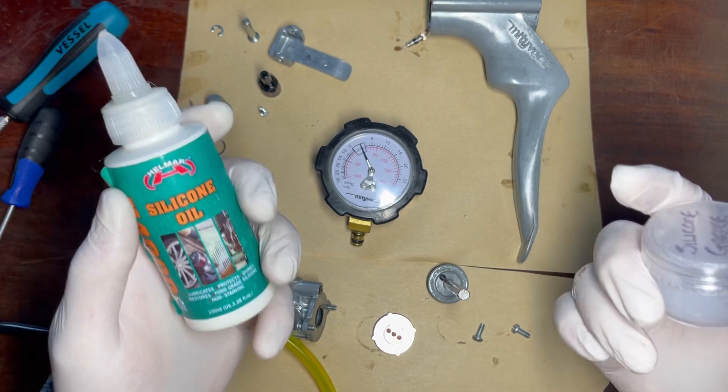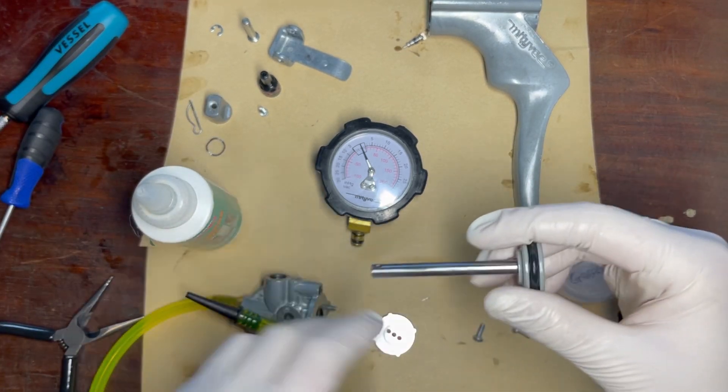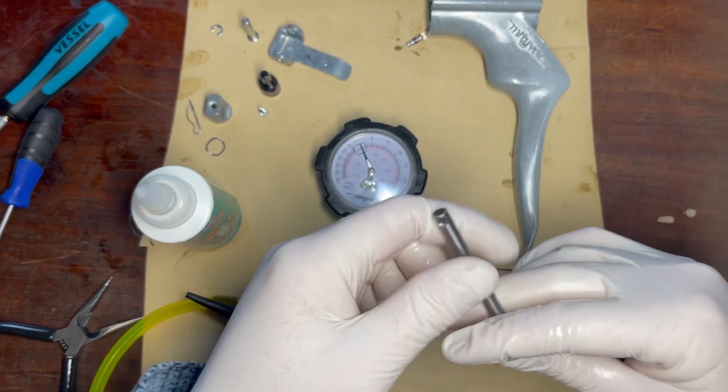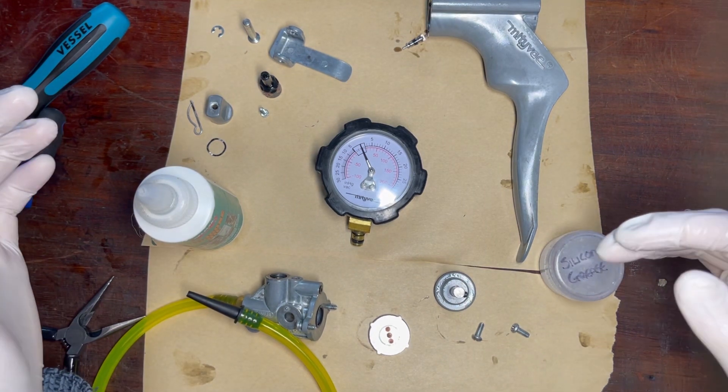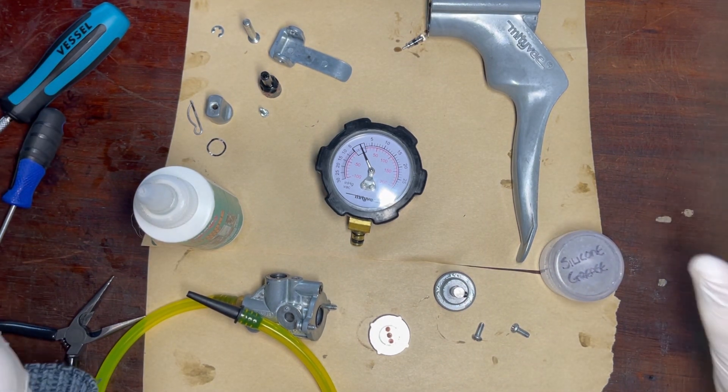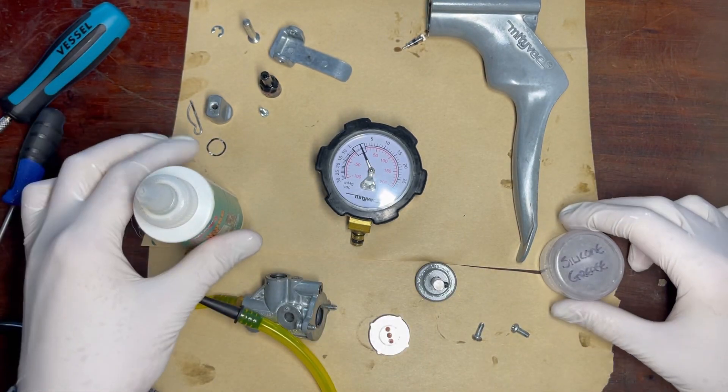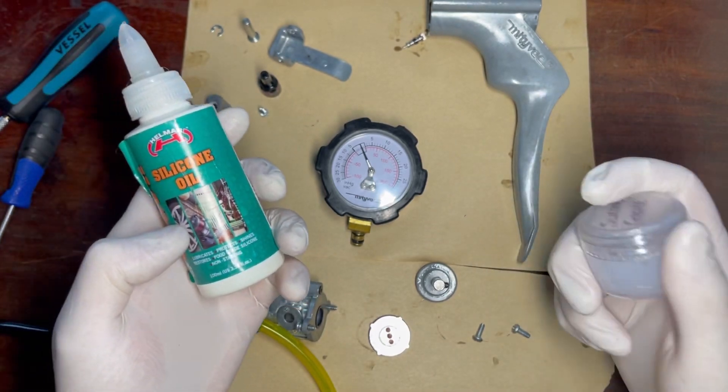Then we have to know what lubricants and what grease to use. These O-rings that are black may very well be nitrile, which means that they'll be resistant to petroleum products. So grease like Vaseline or bearing grease would probably be okay. However, I am not certain that these are not just rubber O-rings. Therefore, I always recommend, if in doubt, use silicone oil and silicone grease.